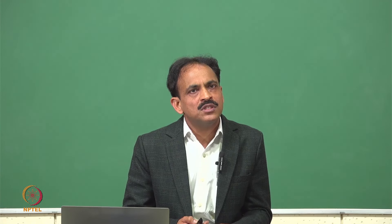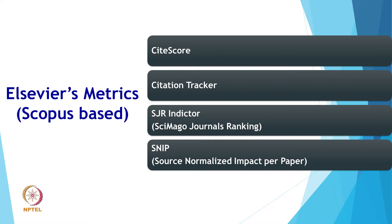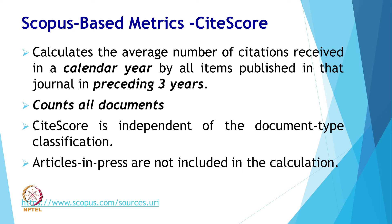Elsevier-based (Scopus) metrics include CiteScore, CiteScore Tracker, SJR (SCImago Journal Ranking), and SNIP (Source Normalized Impact per Paper). CiteScore metrics, introduced in 2016, offer a family of eight indicators to analyze the publication influence of serial titles. CiteScore calculates the average number of citations received in a calendar year by all items published in that journal in the preceding three years. It counts all document types since they all have potential for text citations, so CiteScore is independent of document classification. Articles in press are also included in the CiteScore calculation.